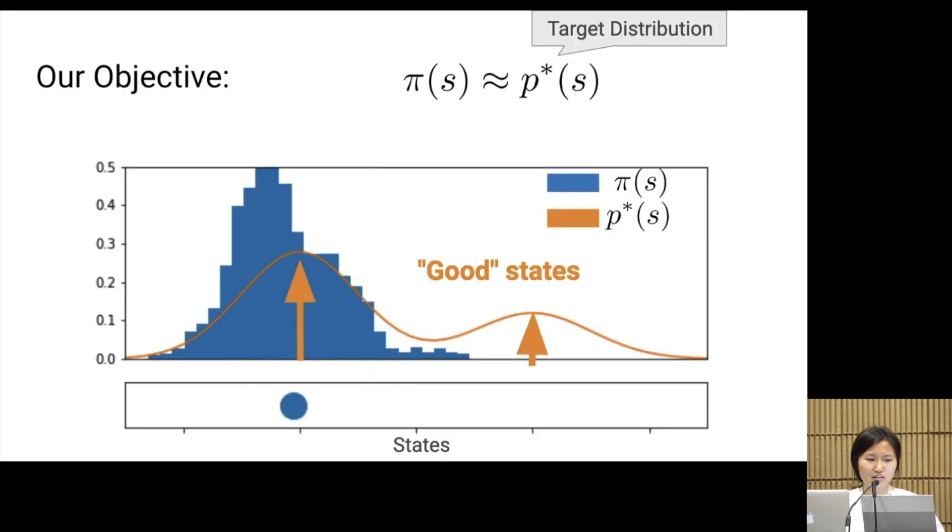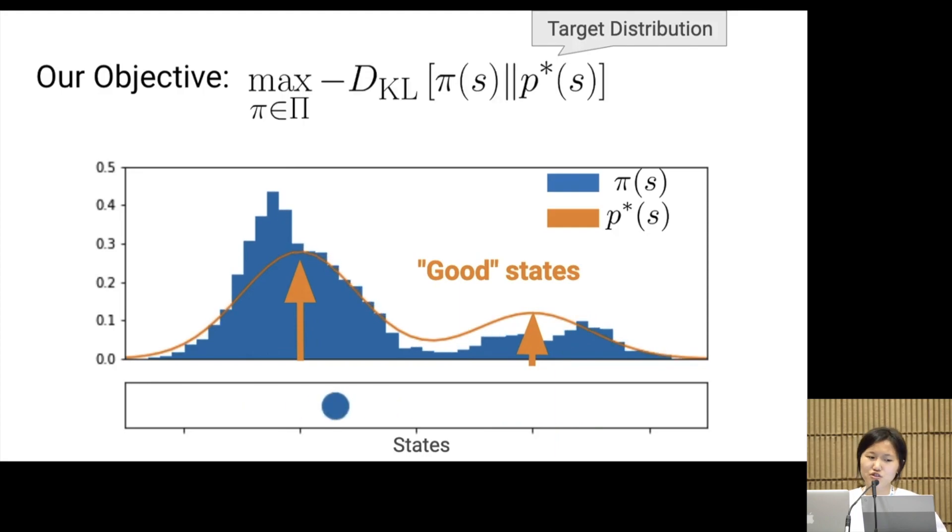We can easily inject prior knowledge into the target distribution p* by placing higher mass on states that we know are good. To match distributions, we minimize the KL divergence between π and p*. Note that this objective is zero when π is exactly equal to p*.